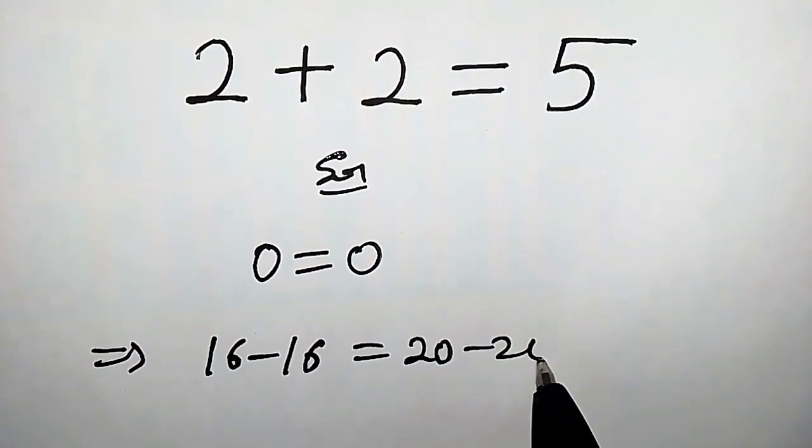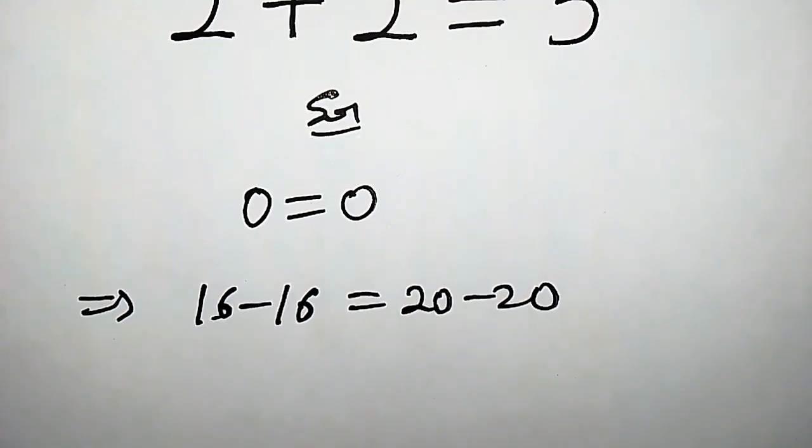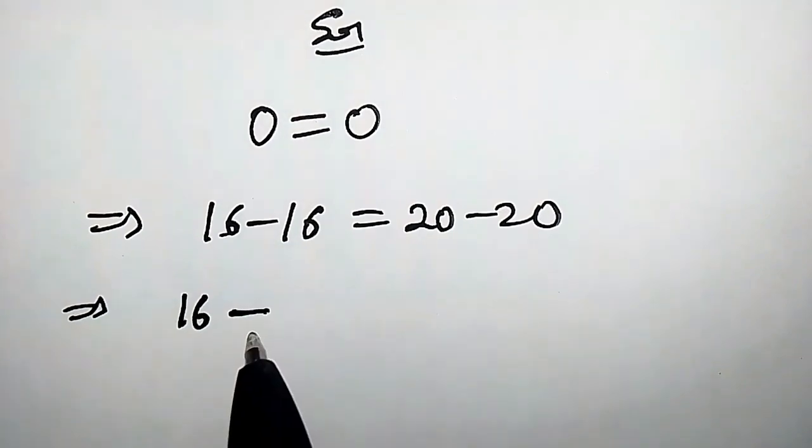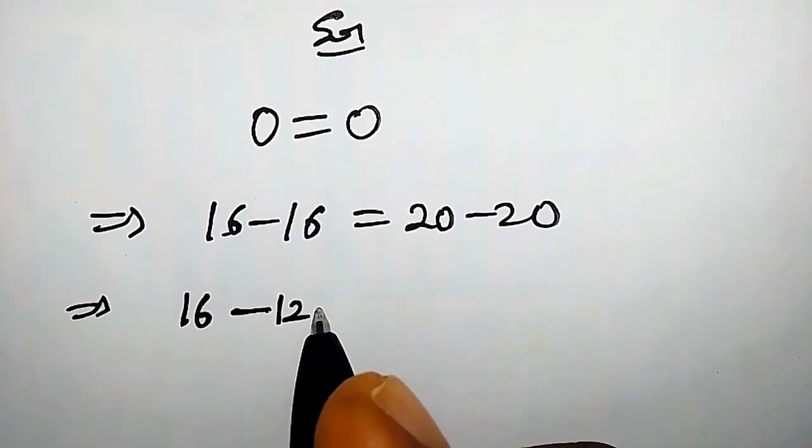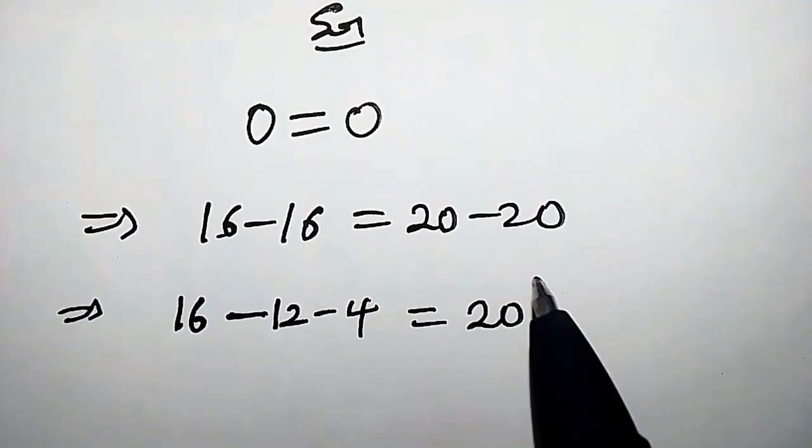Because 16 minus 16 is 0, 20 minus 20 is 0. So this implies that we have 16 minus 16, which could be written as 16 minus 12 minus 4, which is equals to 20. Likewise we can rewrite 20 as 20 minus 15 minus 5.